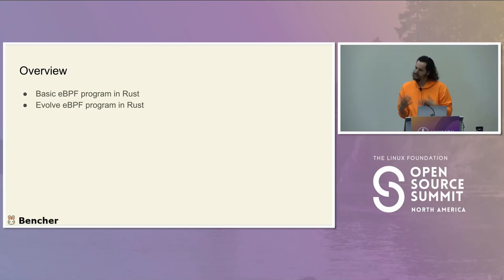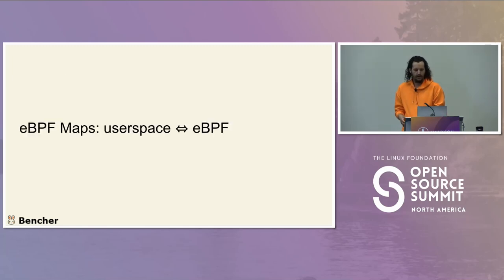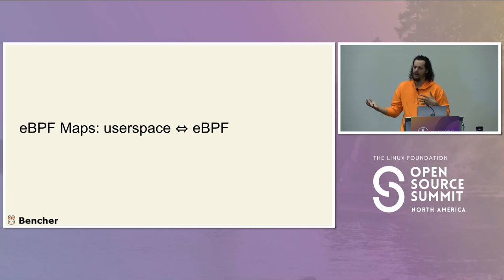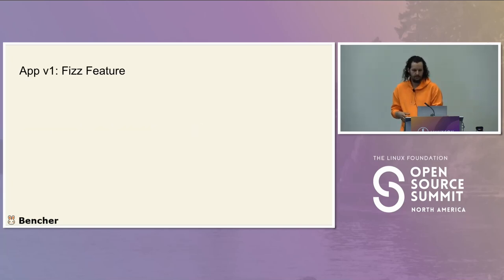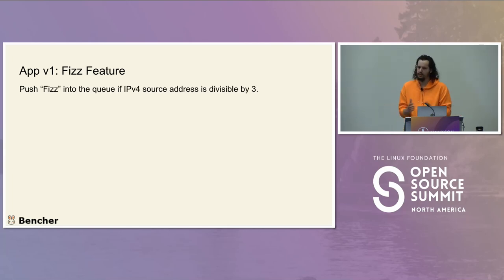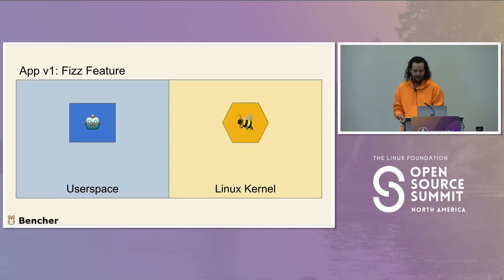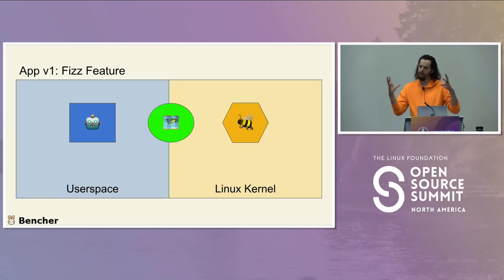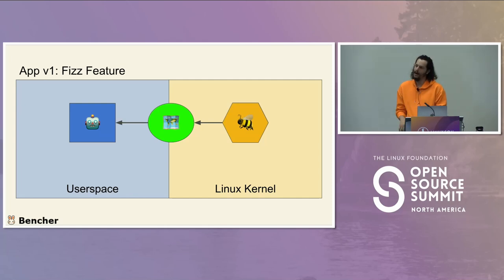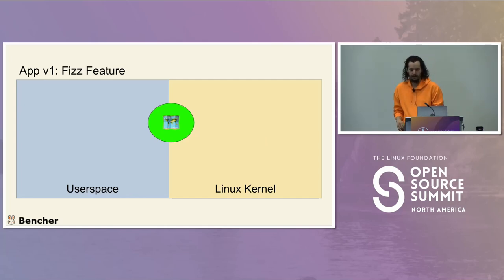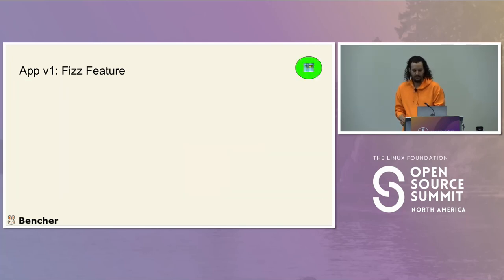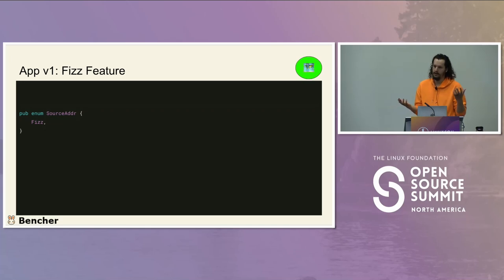We're going to evolve this and create another version using eBPF maps, which allow communication between user space and eBPF and make things start getting interesting. We're going to implement a FizzBuzz feature: push Fizz into a queue if the IPv4 source address is divisible by three, otherwise return XDP pass. This introduces a shared map area — from the kernel side we push, and from user space we pop.